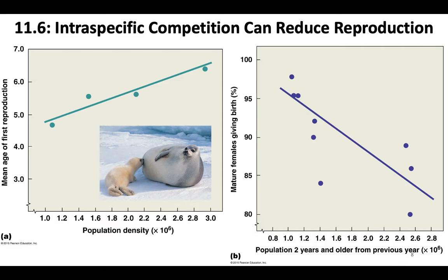Fertility in harp seals is also density dependent. As seal populations increase, the percentage of females giving birth decreases. Giving birth is energetically costly, and a pregnant female harp seal requires more nutrition than a non-pregnant one. So if nutrition is limited, that decreases the number of harp seals that can give birth. There is a pretty strong correlation visible in the data where fertility decreases with population density.